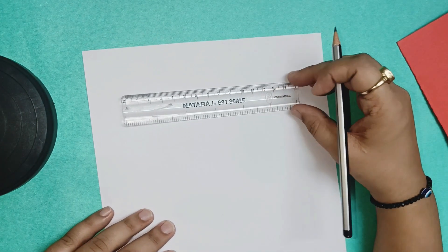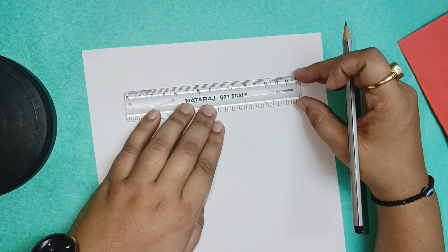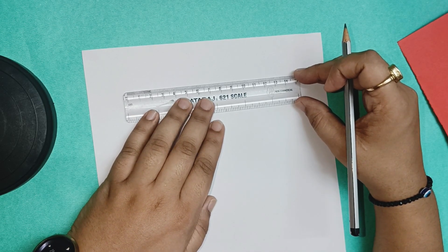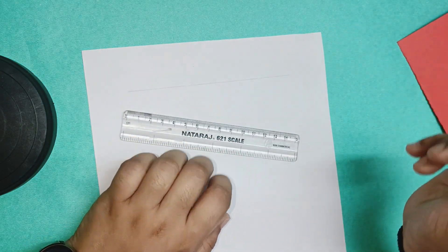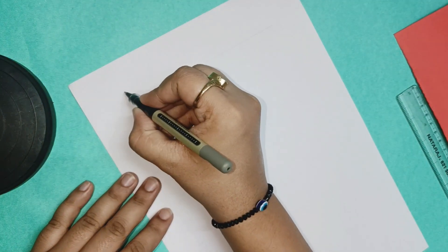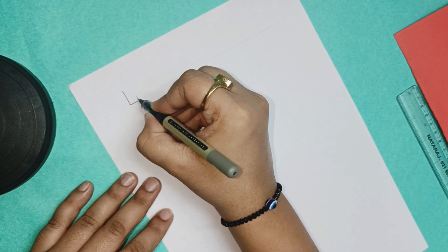Now let us start by adding the heading to the activity sheet. Here I am drawing a line first so that whatever heading we have to write, we can write it in a very neat and clean manner. So write the heading lattice multiplication.